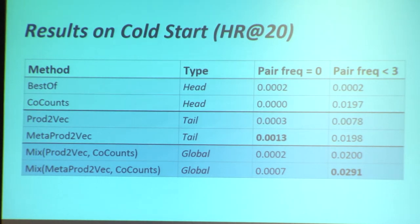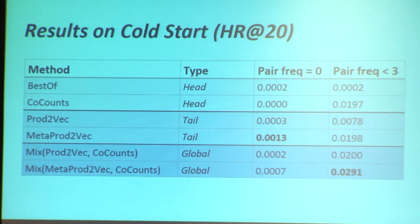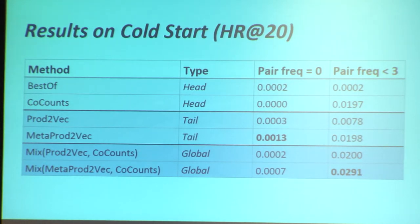Narrowing down on cold start, where we are most interested, we look at results where the test pair was never seen in training — essentially link prediction. Pair frequency zero means you never saw this query-next-item pair in training. Co-counts has no chance because you've never seen the pair. Best-of does pretty well. Prod2Vec does slightly better. Meta-Prod2Vec does much, much better. And when pair frequency is low but not zero, the mix already does much better than all other methods.